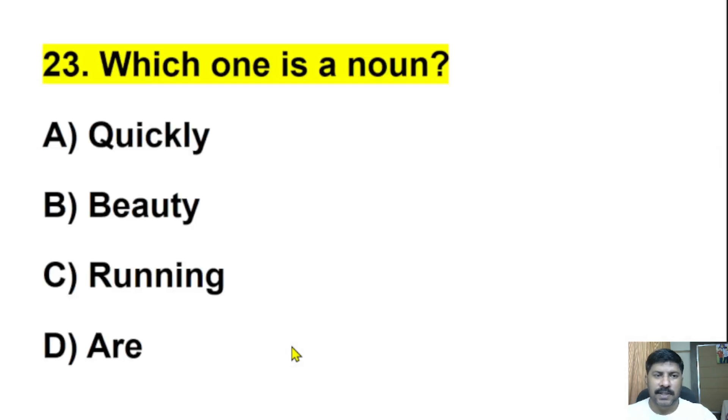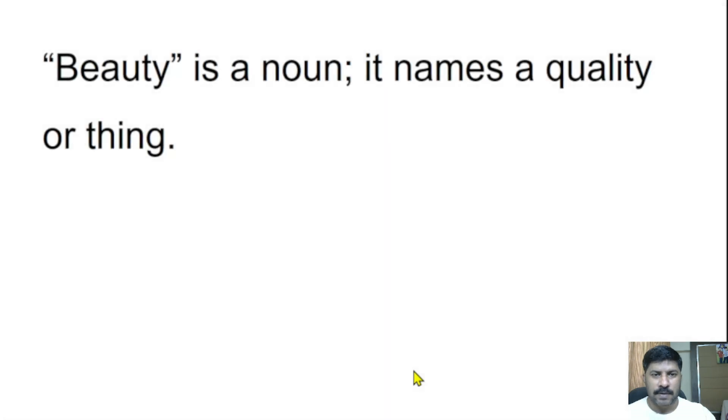Twenty-third question: Which one is a noun? Quickly, beauty, running, or are? The correct answer is beauty. Beauty is a noun. It names a quality or thing.